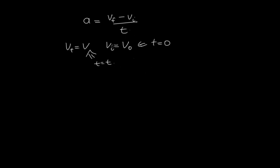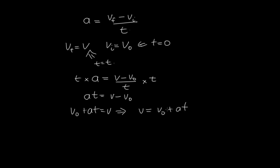So now all we need to do is substitute these into this equation. So we've got a is equal to v minus v0 on t. Multiply both sides through by t, and we end up with at is equal to v minus v subscript 0. And so moving this over to this side, we end up with v0 plus at is equal to v, which tells us that v is equal to v0 plus at. The final velocity is equal to the initial velocity plus the acceleration times the time t.